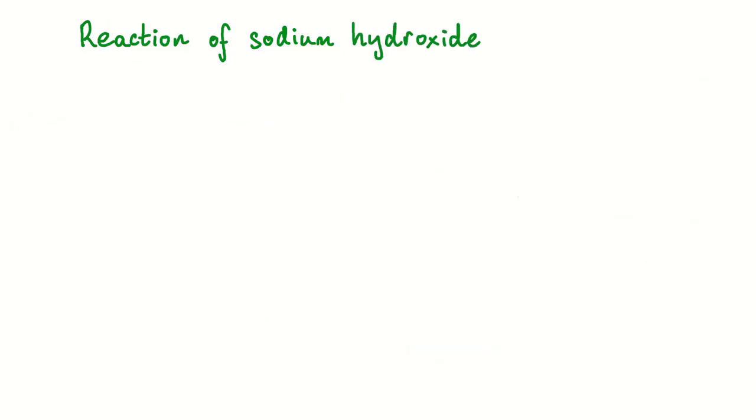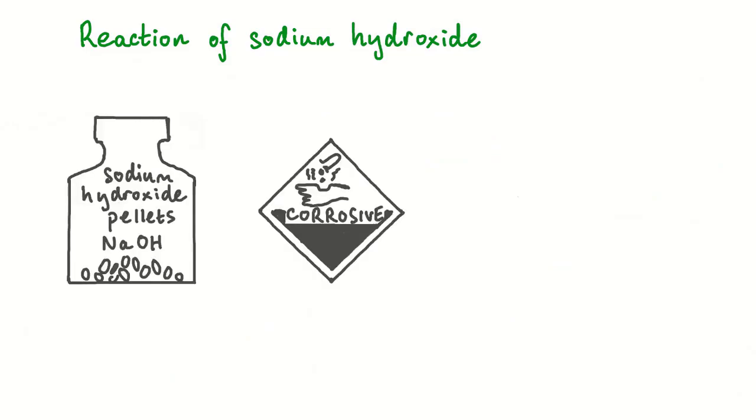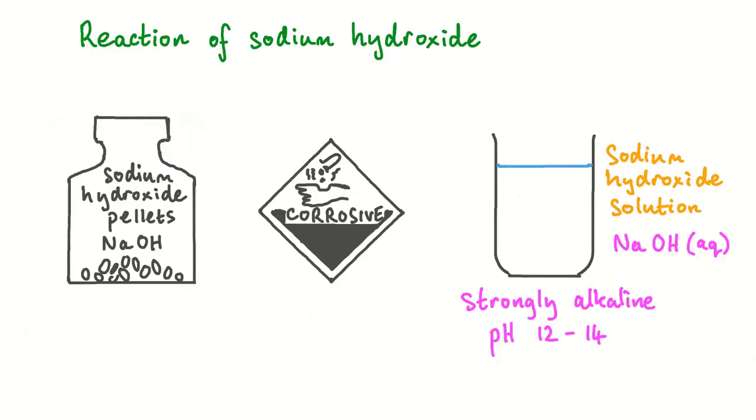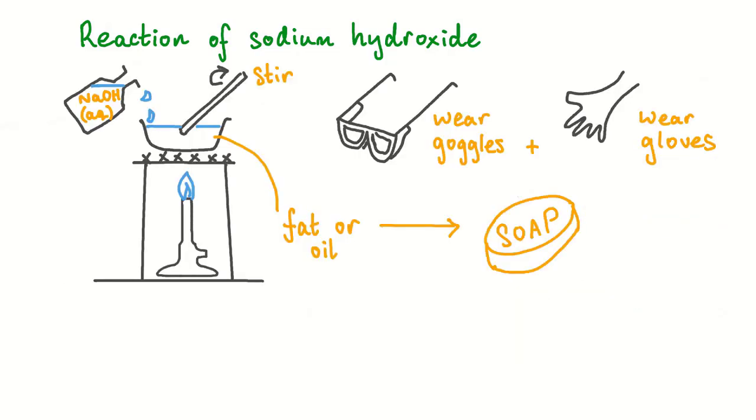Now we look at the properties of sodium hydroxide. Sodium hydroxide is a corrosive white solid in its pure form. It dissolves very easily in water, the process being highly exothermic. The solution is highly alkaline and it has a soapy feel to touch. Sodium hydroxide solution can be heated carefully with fats or oils to produce soap.